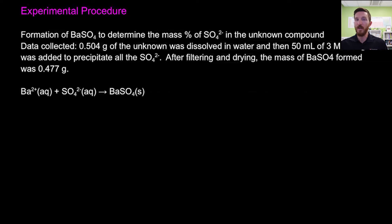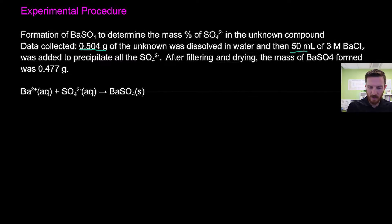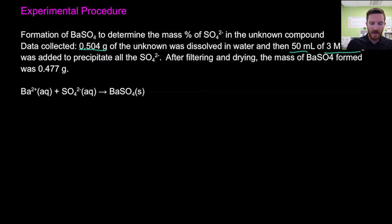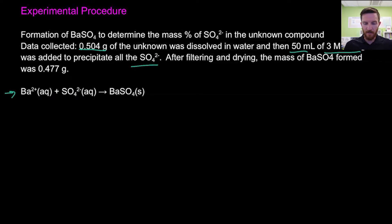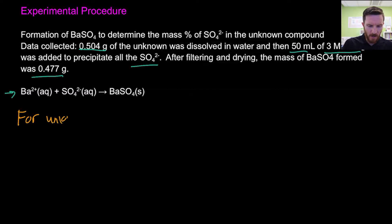We took our solid and reacted it with barium ions by adding barium chloride. We have 0.504 grams of the unknown and added 50 mL of 3-molar barium chloride — enough to give us an excess of barium ions. The sulfate originally in the sample limits how much precipitate forms, and it precipitates out all of the sulfate present. For the unknown, we want to find the experimental mass percent of sulfate, which is the mass of sulfate divided by the total mass, made into a percentage.